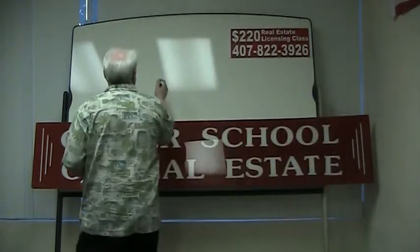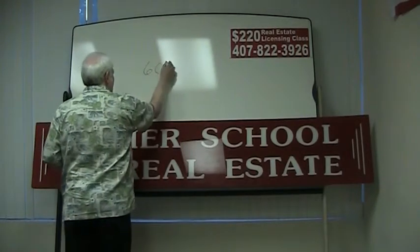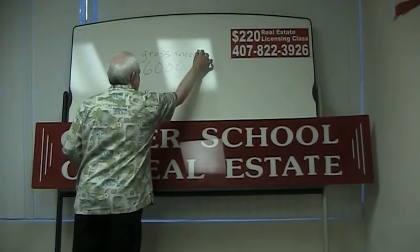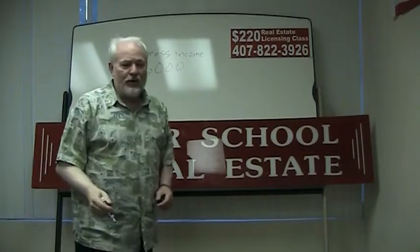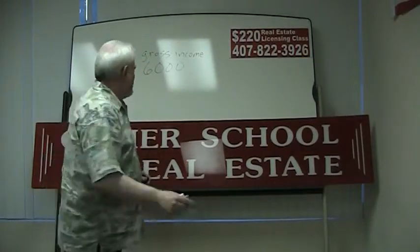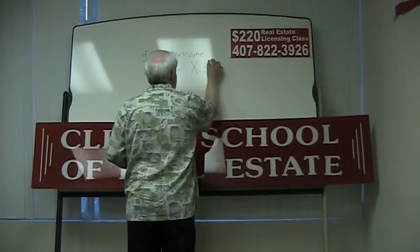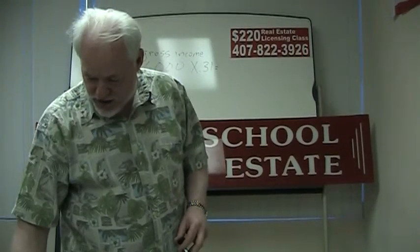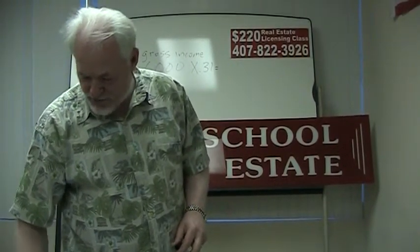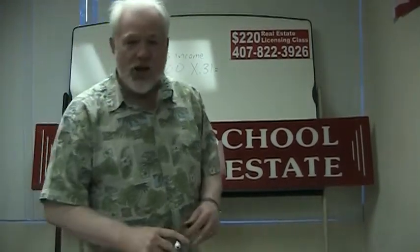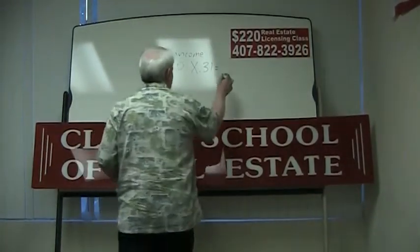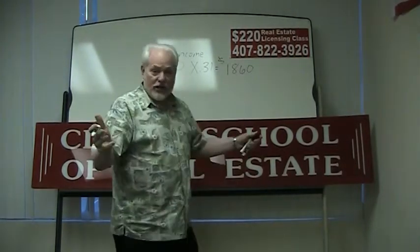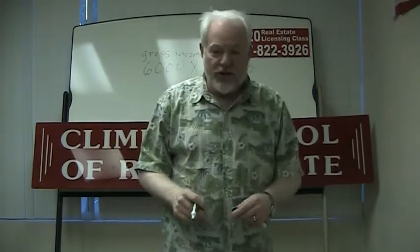FHA guidelines says you can take 31 percent of your income and pledge it as a house payment. For instance, if you make six thousand dollars a month, that's your gross income before you pay taxes, before anything. You take 31 percent of that, which is one thousand eight hundred and sixty dollars a month.